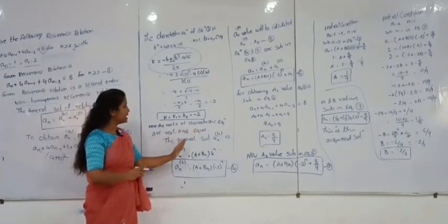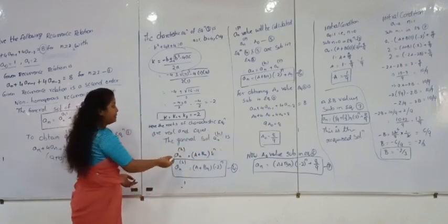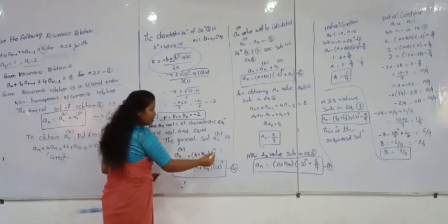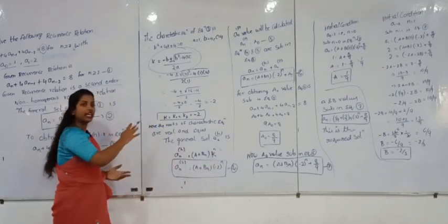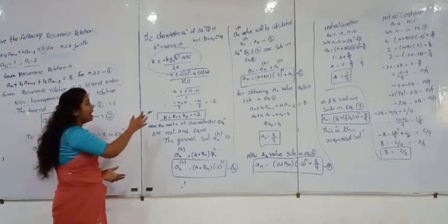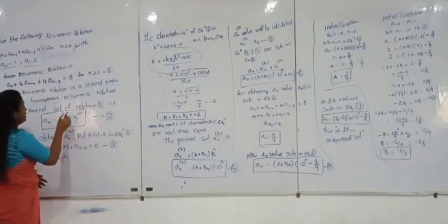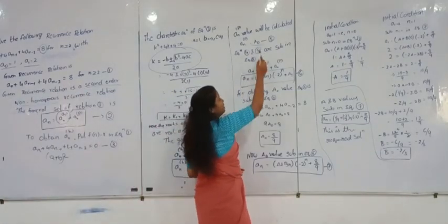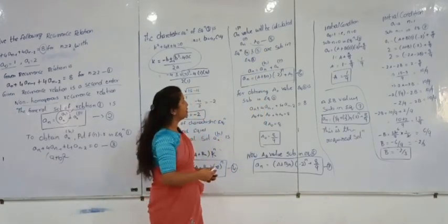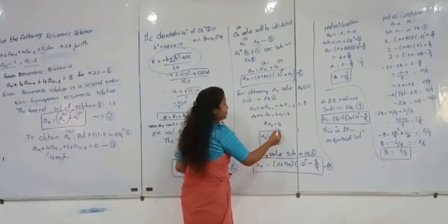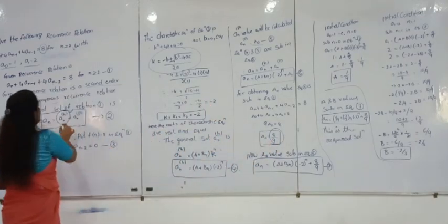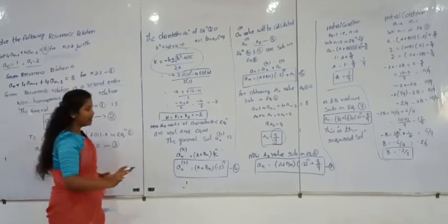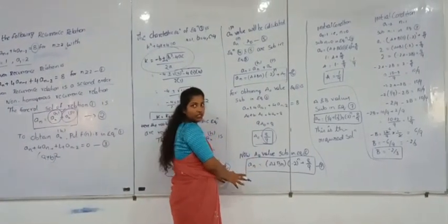Here the roots of the characteristic equation are found. The general solution for A_n^h uses the formula with the k value substituted in. First, find the k value, then substitute into the formula to complete A_n^h. Next, A_n^p equals A₀, and we need to find the value of A₀. After finding both A_n^h and A_n^p, substitute these values into the general solution equation.